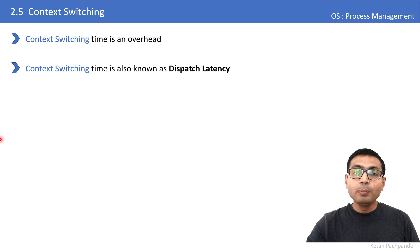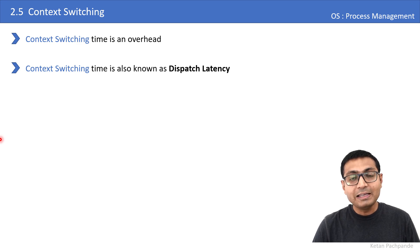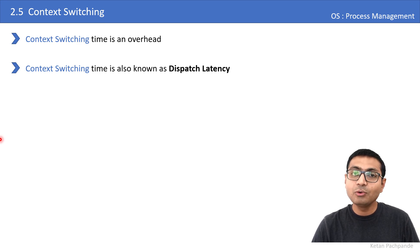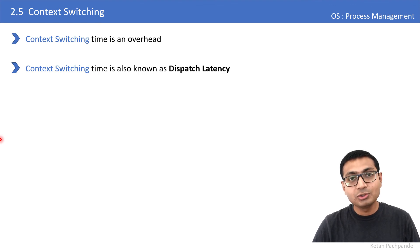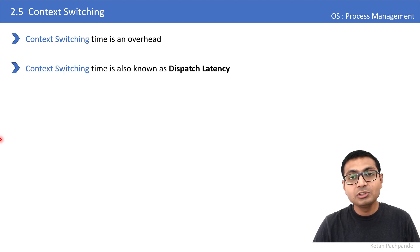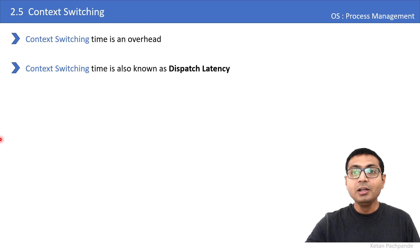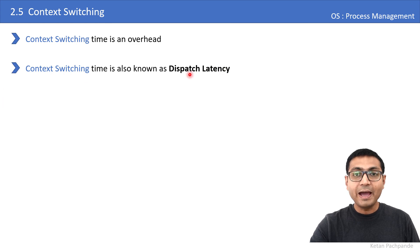Regarding context switching time: the time involved in performing context switching is an overhead to the OS — it is wasted time during which neither P1's nor P2's instructions are executed. If context switching takes one millisecond, that millisecond is purely wasted and no useful output is produced. This context switching time is also known as dispatch latency.